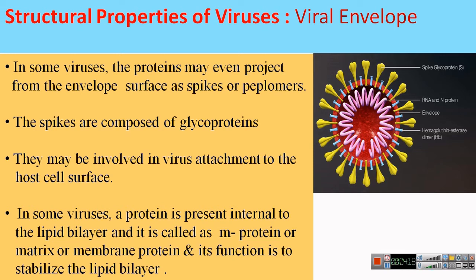In some viruses, a protein is also present internal to the lipid bilayer, called the M protein, membrane protein, or matrix protein. Inside or below the envelope there is a layer of this protein, and that layer is responsible for giving stability to the phospholipid bilayer present in the envelope. Coronavirus is also an example of an enveloped virus, and it also has peplomers or spikes projecting out from the envelope which help it attach to the host cell surface.